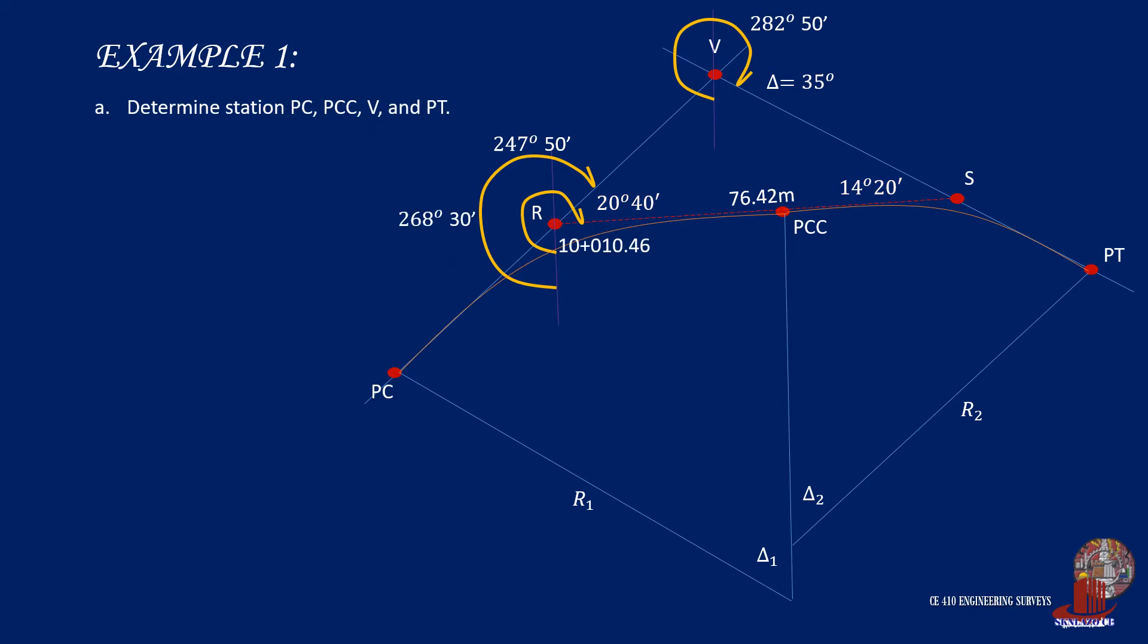With R1 and delta 1 already known, we can actually compute all the elements of the first curve. So, tangent T1 equals R1 times tangent of half of delta 1. Plug the known values to get tangent 1 as 52.25 meters. Also, take the length of curve 1, and that is delta 1 times R1 times the conversion of 2 pi over 360 degrees, which gives 103.36 meters.